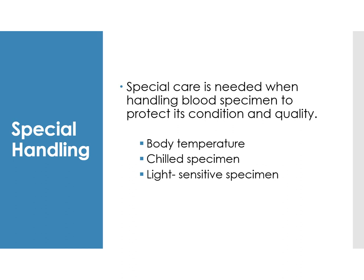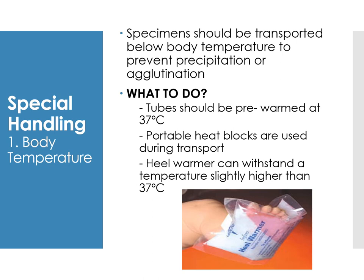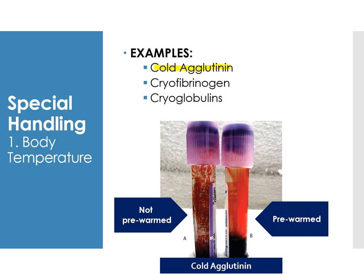Special care is needed when handling blood specimens to protect their condition and quality. Body temperature is important — some specimens need to be kept warm while others need to be chilled, and some are light sensitive. For body temperature specimens, the tube should be pre-warmed at 37 degrees Celsius. Portable heat blocks or heel warmers can also be used. Examples include cold agglutinin, cryofibrinogen, and cryoglobulins.